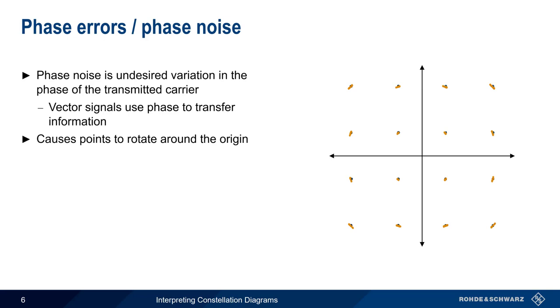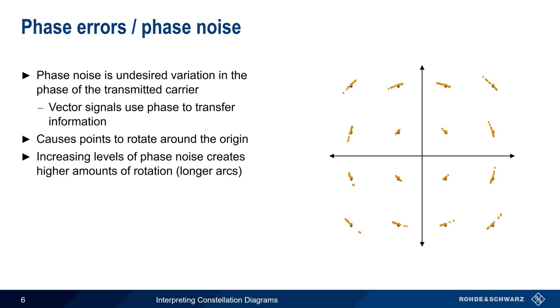As the level of phase noise increases, the amount of rotation also increases, and the arcs become longer.